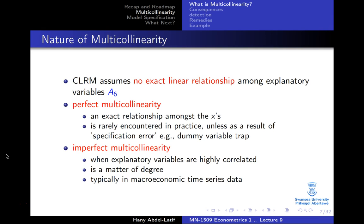The other case is imperfect multicollinearity. In this case, the explanatory variables are highly correlated. As I said, this is going to be a matter of degree, and this is a very typical case with macroeconomic time series data.